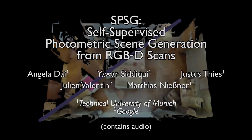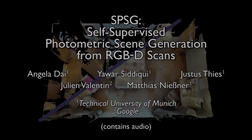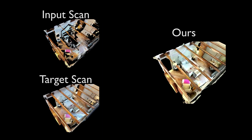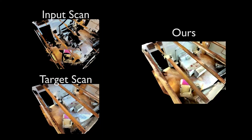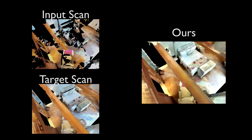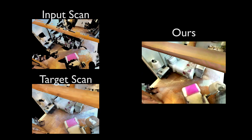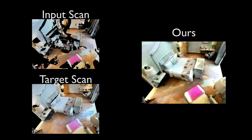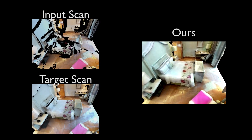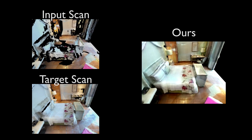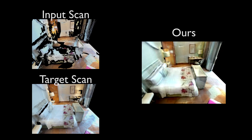We present SPSG, self-supervised photometric scene generation from RGB-D scans. We generate high-quality colored 3D models of scenes from incomplete RGB-D observations by learning to infer unobserved scene geometry and color in a self-supervised fashion.